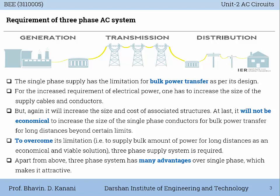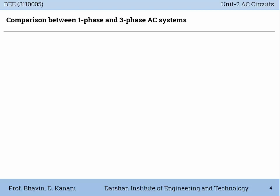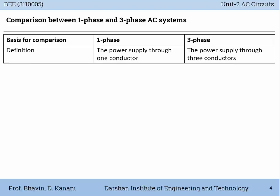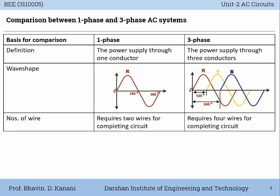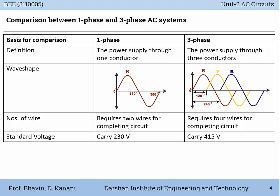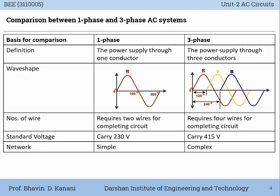Apart from the above, the three-phase system has many advantages over single-phase, which makes it attractive. Let us compare a few points. Single-phase system supplies through one conductor, whereas in three-phase system, power is supplied through three conductors. The wave shape of single-phase has only one wave, whereas in three-phase there are three individual waves for three different phases: R, Y, B. Single-phase supply requires two wires for completing the circuit, whereas three-phase requires four wires.